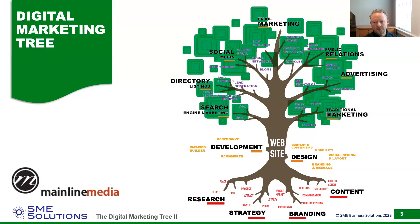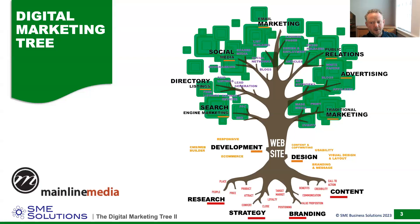In the last session, we reviewed the first two roots of your business: research, which gave us the four P's of your marketing mix — product, price, place, and people (your target demographic) — and strategy, which is ultimately the buyer's journey in tourism: dreaming, planning, booking, experiencing, and sharing. In this session, we'll be finalizing the last roots — branding and content — and then reviewing those elements in the context of creating our web presence, or the trunk of your business.